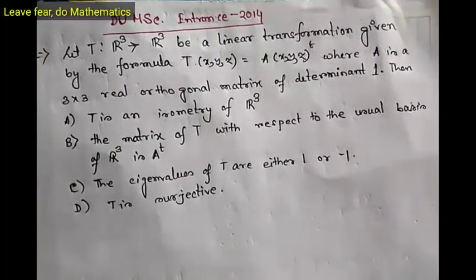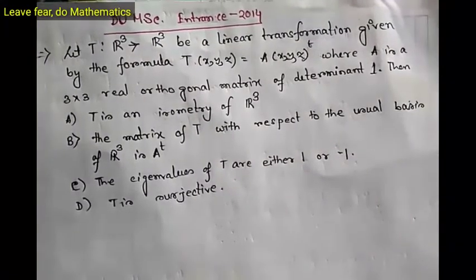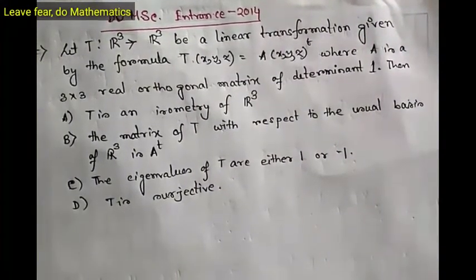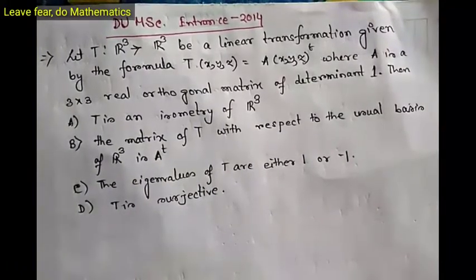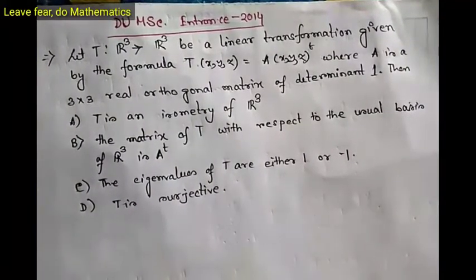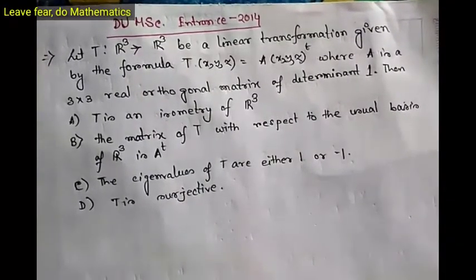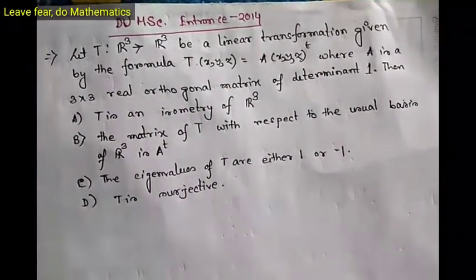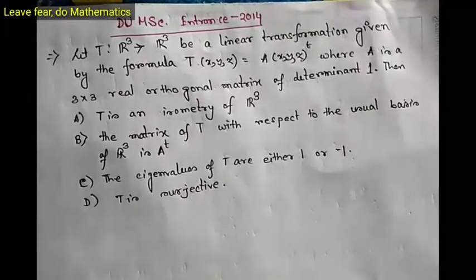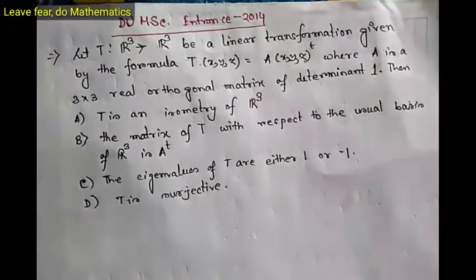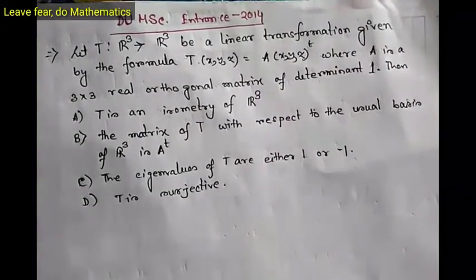The problem says: let T from R³ to R³ be a linear transformation given by the formula T of (x, y, z) equals A times (x, y, z) transpose, where A is a 3×3 real orthogonal matrix of determinant 1. Then we are given four options: T is an isometry of R³; the matrix of T with respect to the usual basis of R³ is A transpose; the eigenvalues of T are either 1 or minus 1; and T is surjective.